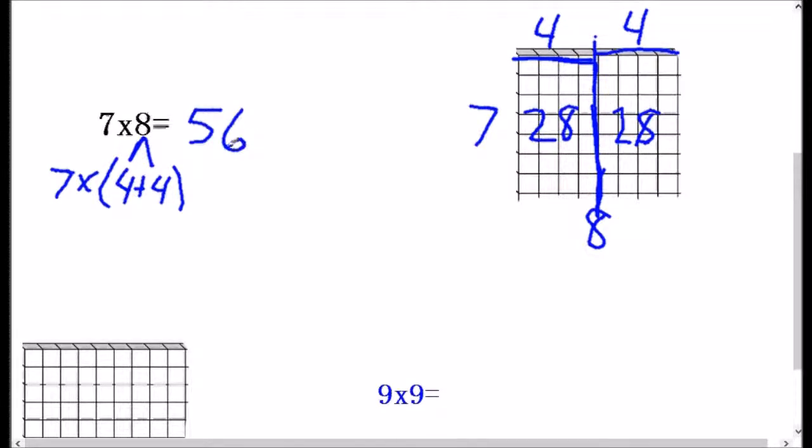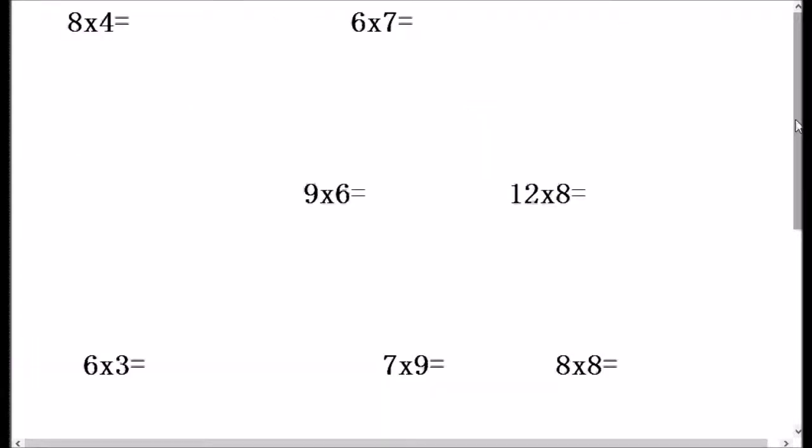So now that we've done all of those, let's see if we can do something without the model. So 8 times 4. Well, I can turn this 8 into 5 plus 3. Because 5 plus 3 equals 8. And those are fairly easy to multiply times 4. So 4 times 5 is 20. And 4 times 3 is 12. And 20 plus 12 is 32.